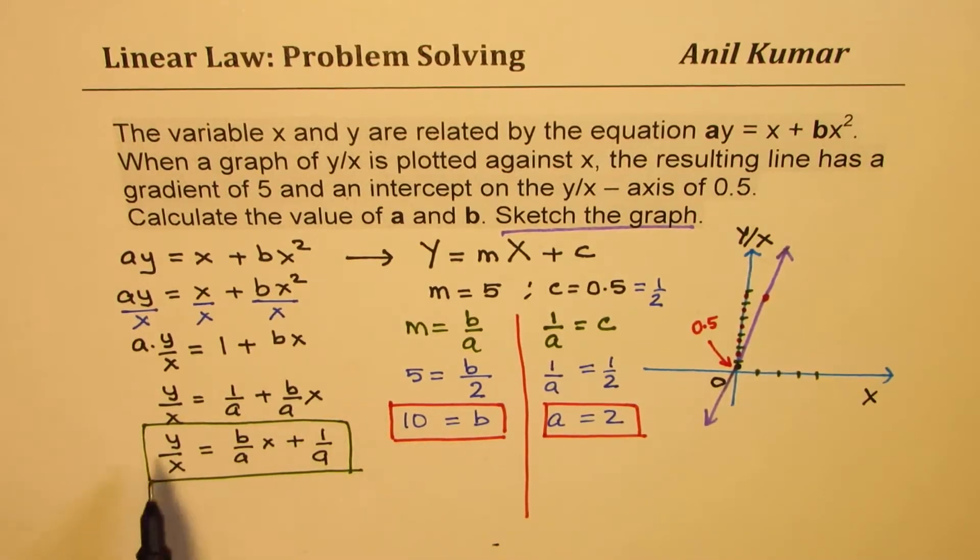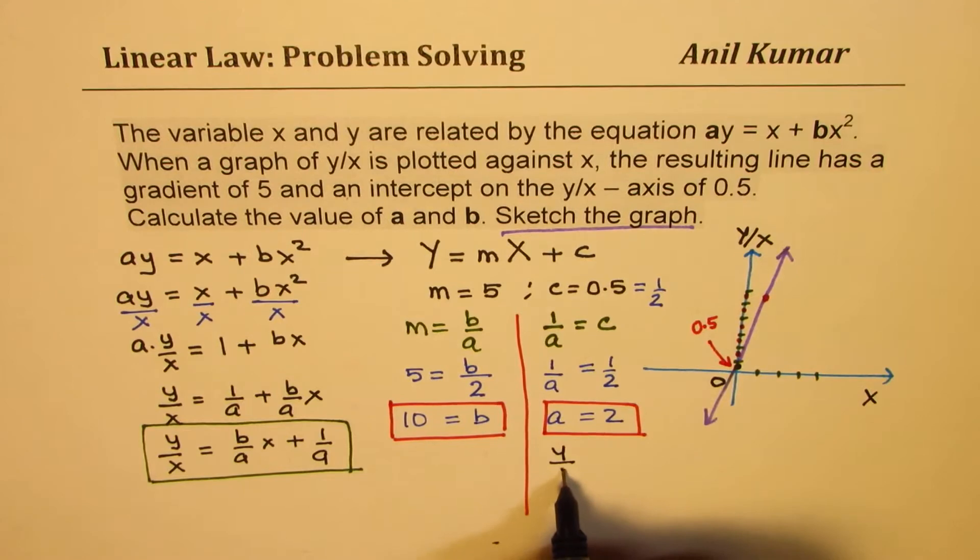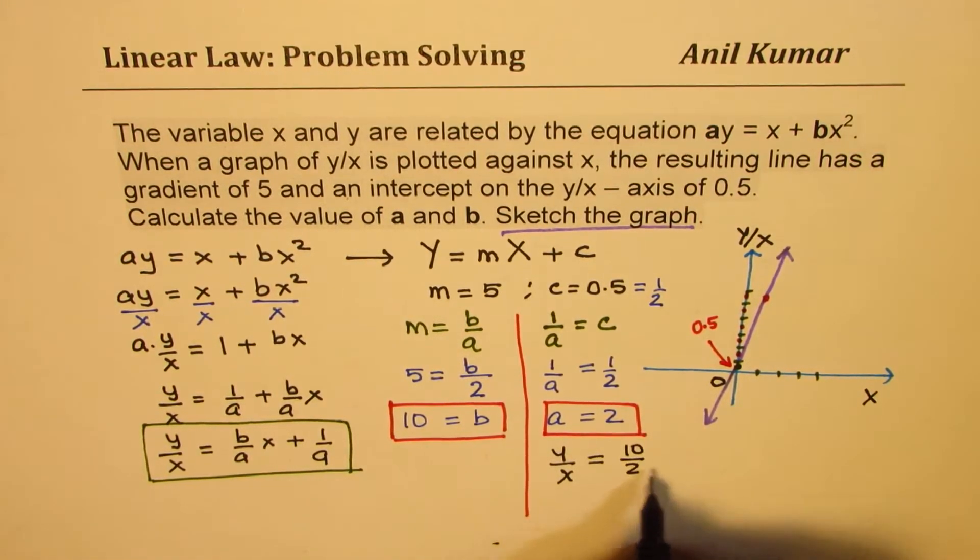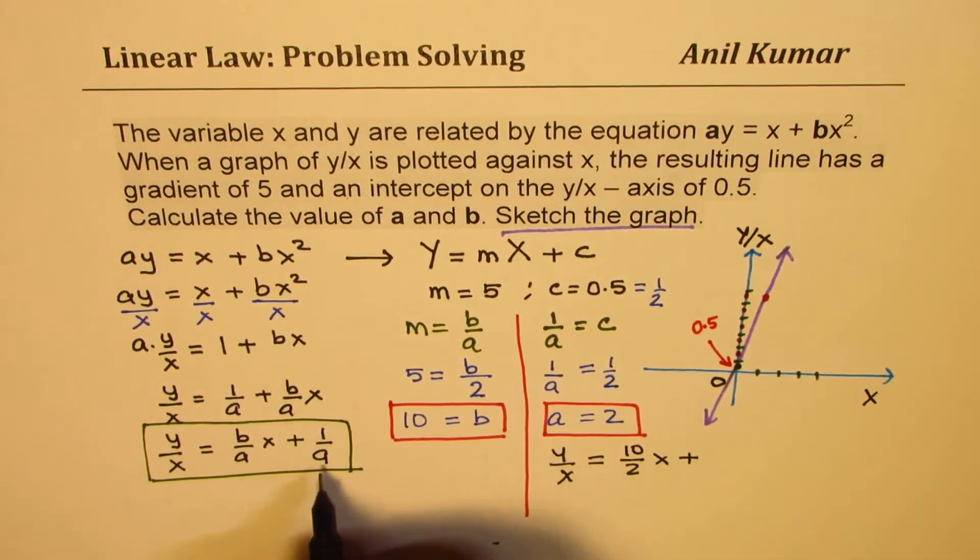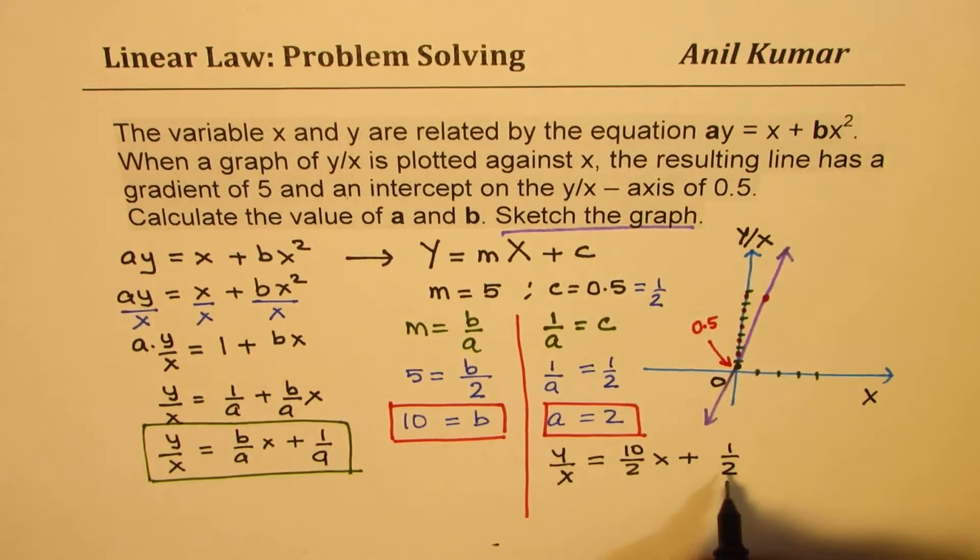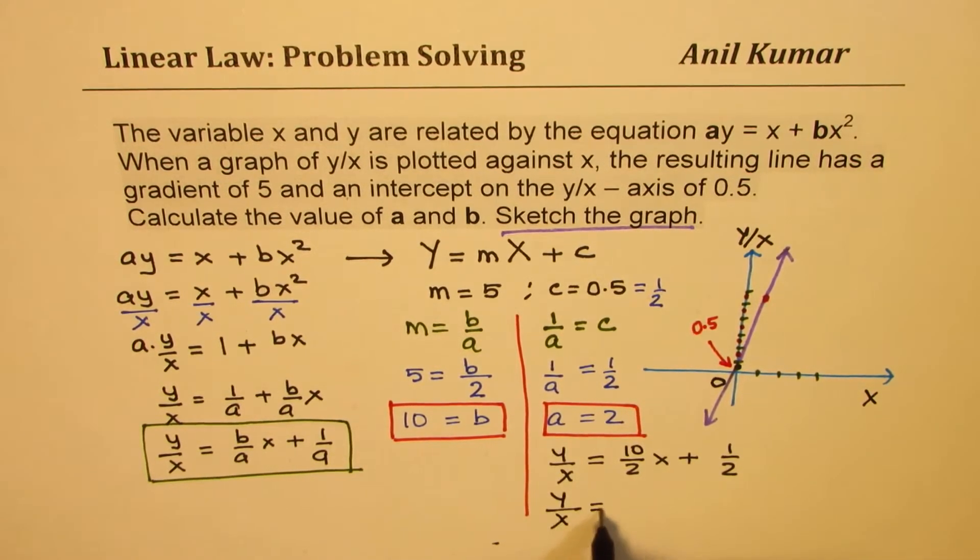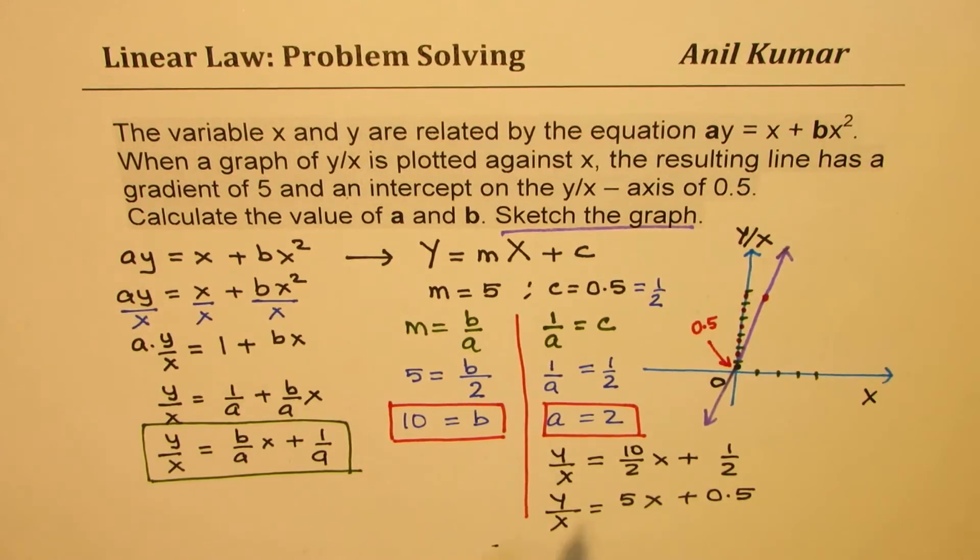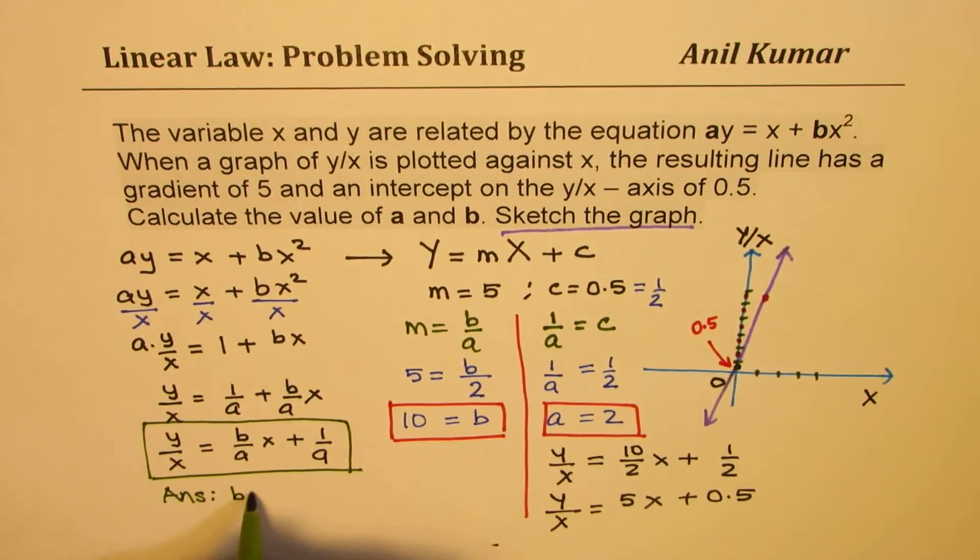The equation could now be written as y/x equals to b/a, which is 10/2 times x plus 1/2, which is 0.5. You get what was expected, which is y/x equals to 5x plus 0.5. So that is what was given to us. It is checked that it is the correct value. So our answer is b equals 10 and a equals 2.